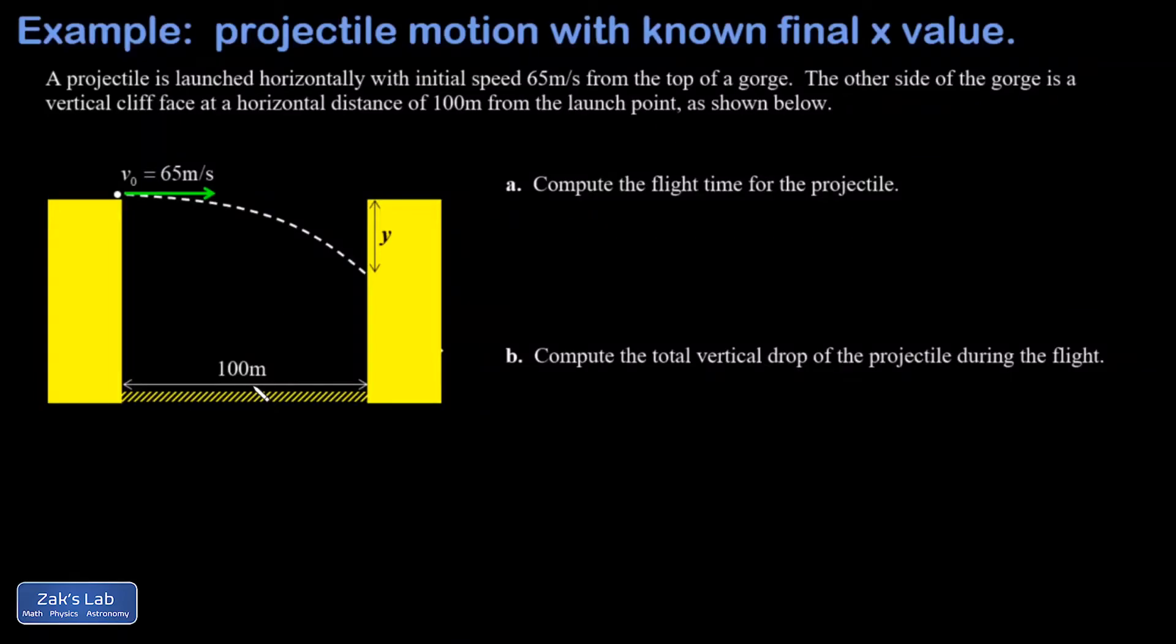In this video we have a projectile motion problem with an initially horizontal velocity vector. The magnitude of that velocity vector or the speed is 65 meters per second, and this projectile was shot horizontally and then drops below the horizontal as it's traveling to the opposite face of this gorge 100 meters away. We're trying to figure out what's the vertical drop that happens during this flight.